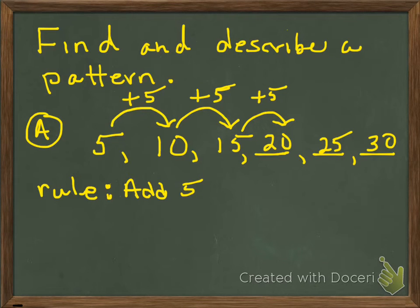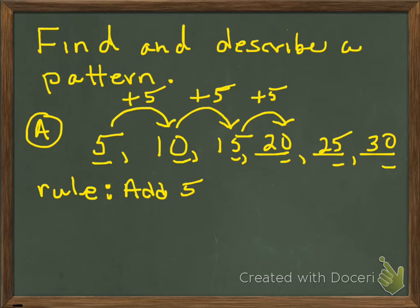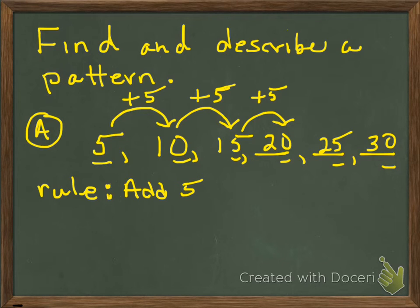Now let me ask you some questions. What do you notice about the digits in the ones place? The digits in the ones place alternate between 0 and 5. That's a good way to describe the pattern. Can you describe the pattern using the words odd and even? The terms alternate between odd and even — 5 is odd, 10 is even, 15 is odd, 20 is even, and so on. Can you describe the pattern using the word multiples? The terms are multiples of 5 — absolutely correct.